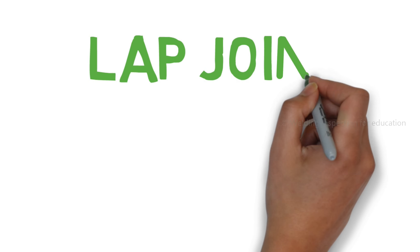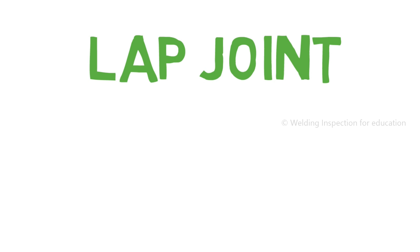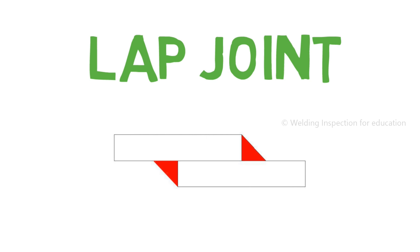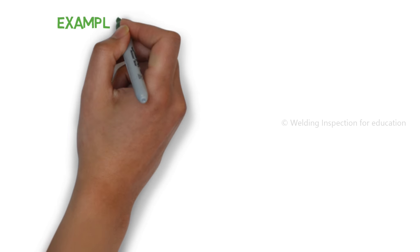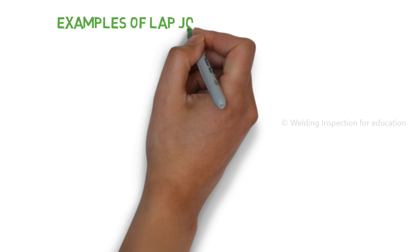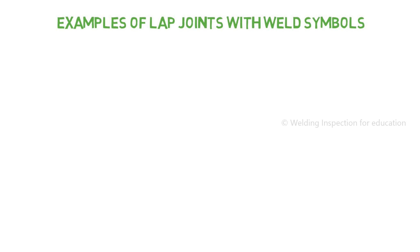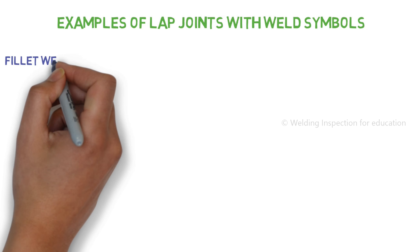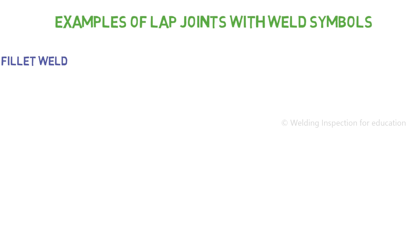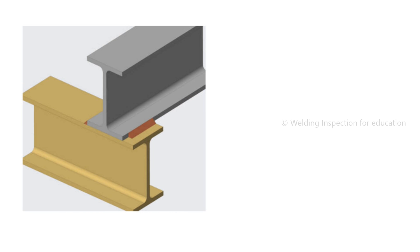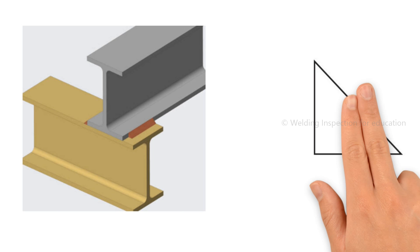Let's understand each type of weld joint in detail. First, the lap joint — here you can see an example of a lap joint along with the weld symbol. Fillet weld lap joint: fillet weld means a connection between two surfaces. It's just like plate on plate or beam on beam, as you can see in this picture.